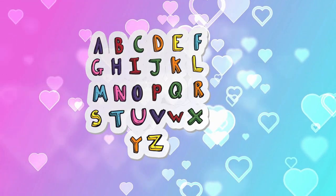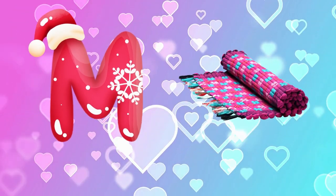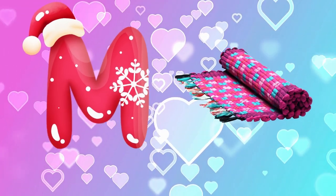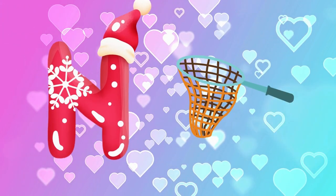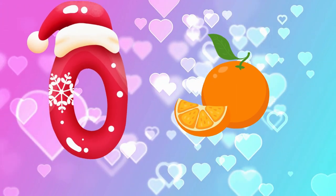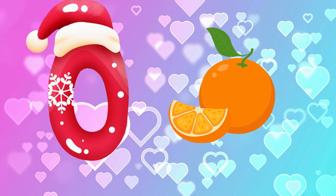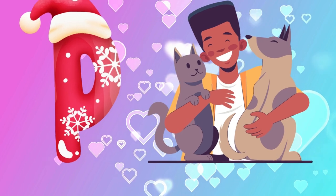M is for mat, m-m-mat. N is for net, n-n-net. O is for orange, o-o-orange. P is for pet, p-p-pet.